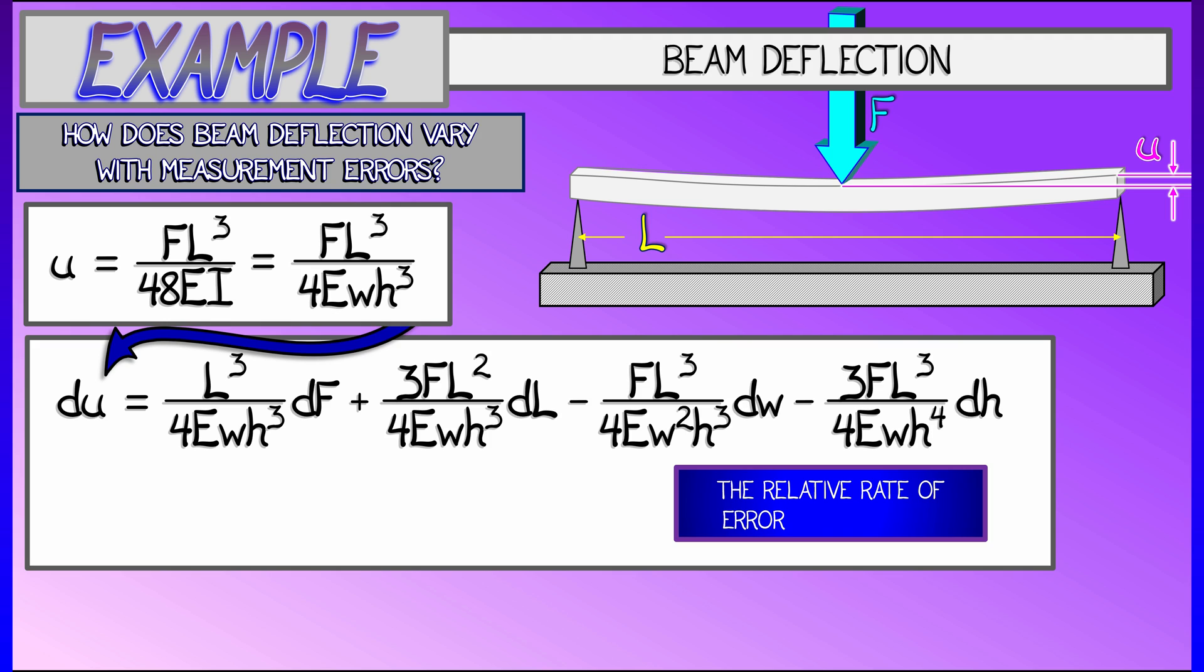Oh wow. That's difficult. And then, then what we need to do is the relative rate of error. We need to take du divided by u. Oh, this is going to hurt so bad. Oh, wait a minute. No, it's not. Look, there's going to be a whole bunch of magical cancellation going on. And what we're going to get is d f over f plus 3 d l over l minus d w over w minus 3 d h over h. Check it. Make sure it works. It's beautiful. This wonderful cancellation.